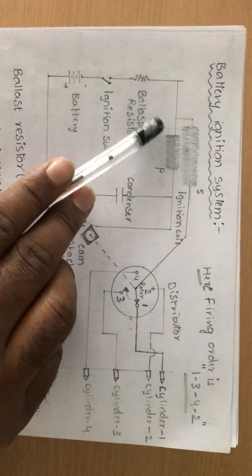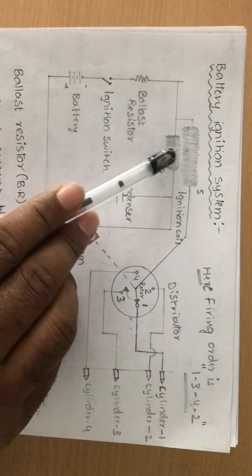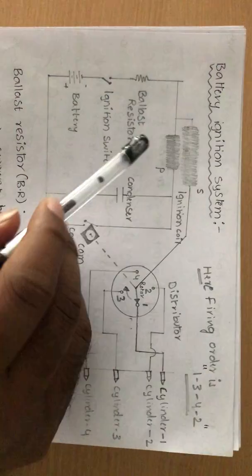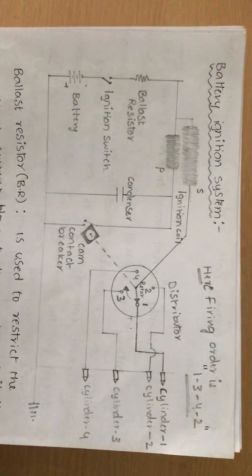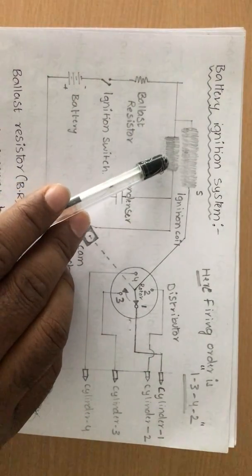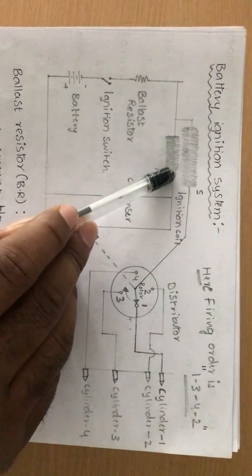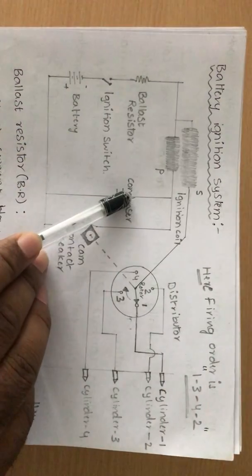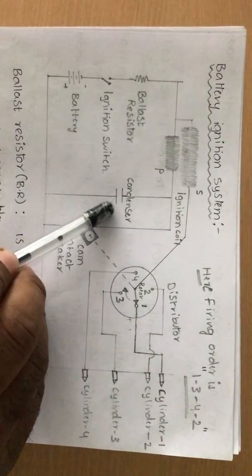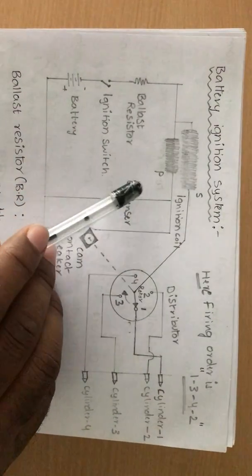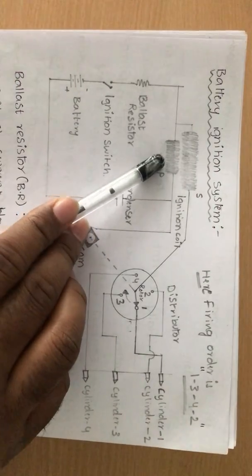The sudden reduction of current in the primary coil induces a changing magnetic field. That sudden change in magnetic field induces an EMF, which drives a current in the same direction as the original current. So the condenser is being charged by two currents: one from the battery, and the second induced in the primary coil due to the change in magnetic field.